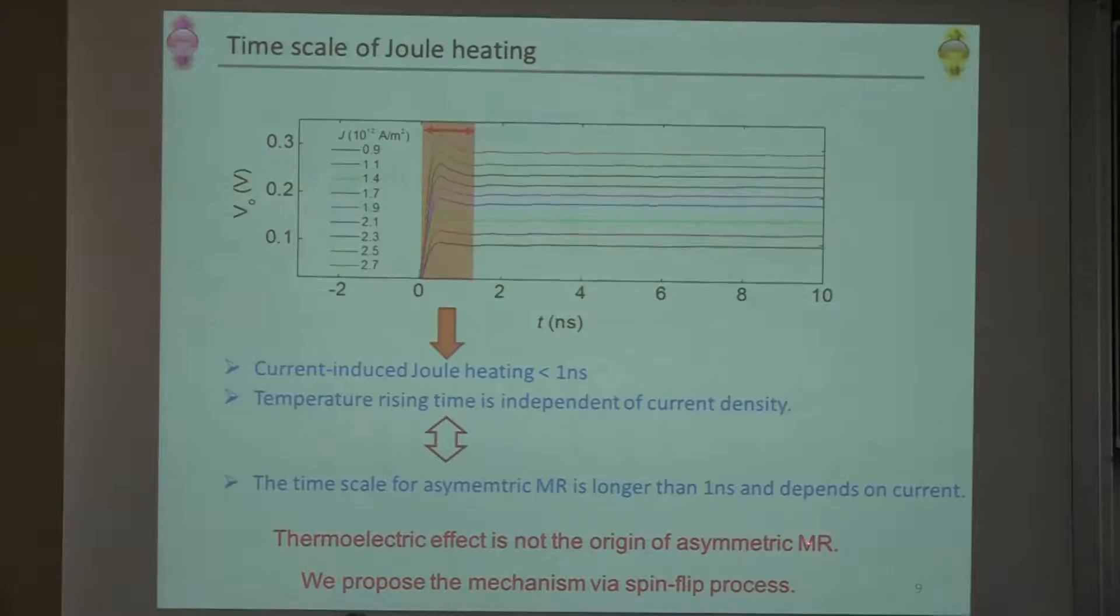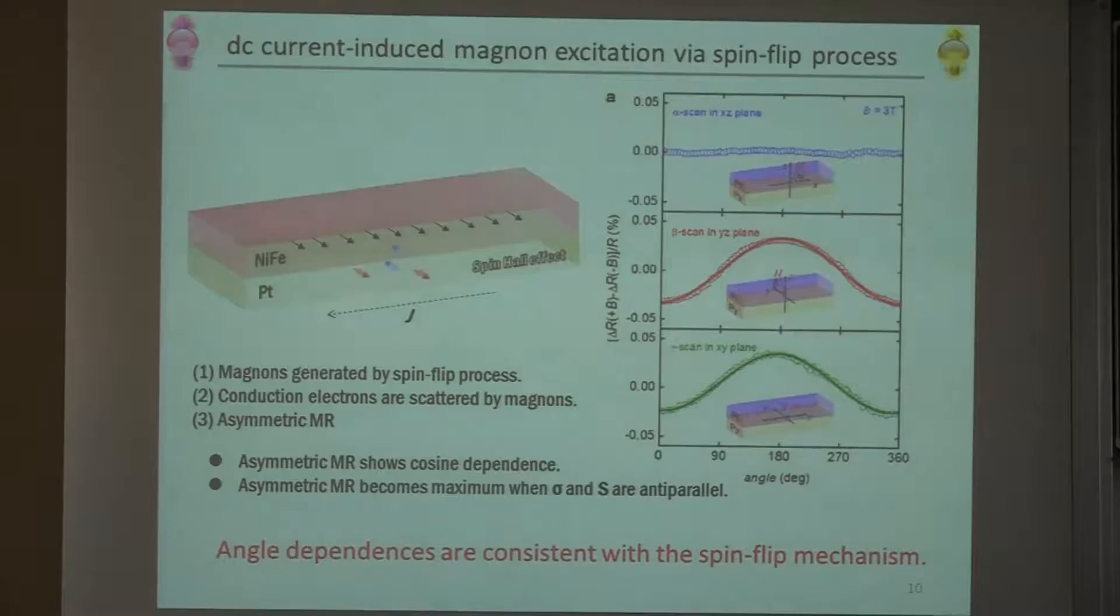So here, we propose a new mechanism by spin-flip process. It's a very simple idea. By injecting a current, we can have a spin flow perpendicular to this film plane. So the spin hits the permalloy, and then we should have spin-flip scattering, which means we should have magnons in permalloy. The conduction electron in the permalloy can be scattered away by this magnon generated by spin-flip scattering. And then we should get an increase in resistance due to this magnon scattering. This is the idea.